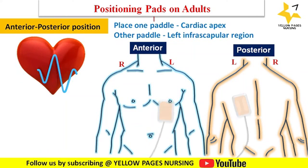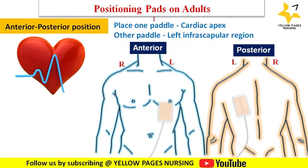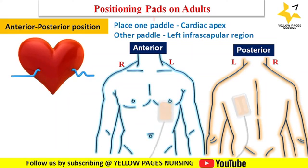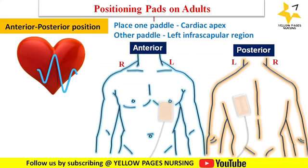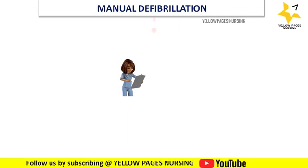The anterior-to-posterior position is also called the front-to-back position. Place the front part over the cardiac apex, between the midline of the chest and nipple on a male victim, or under the breast on a female.